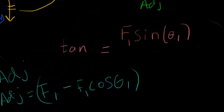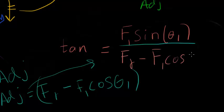Well, hey, now I have the adjacent. I'm just going to plug this sucker up here. Let me go back to my pretty little red. So, now I know FR minus F1 cos(theta1). Boom. That's your answer.